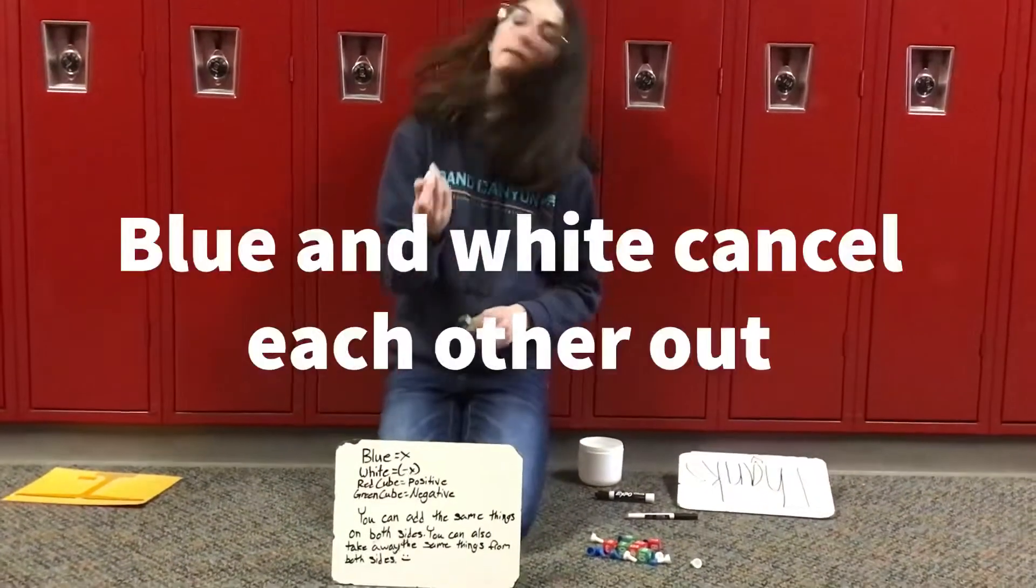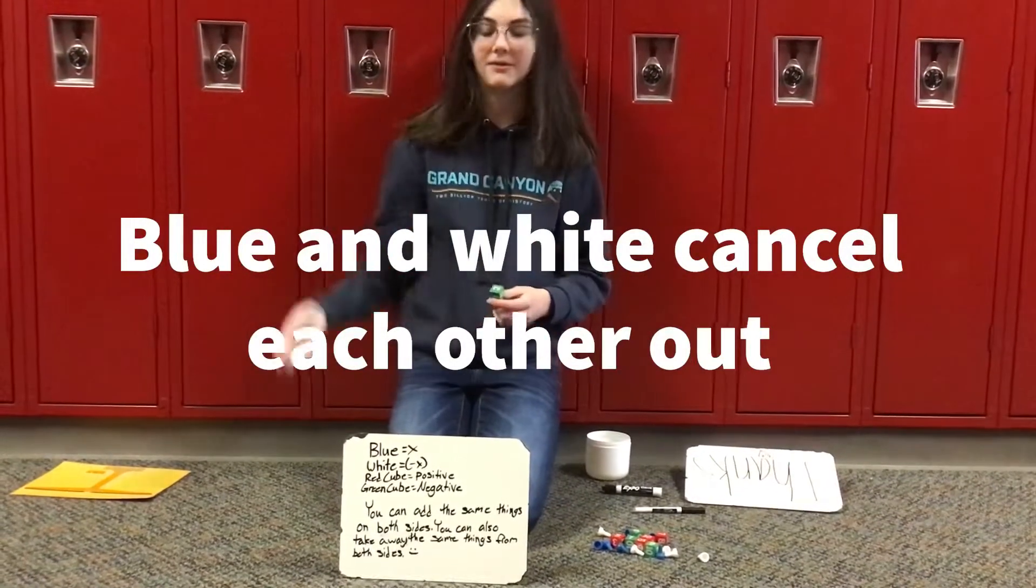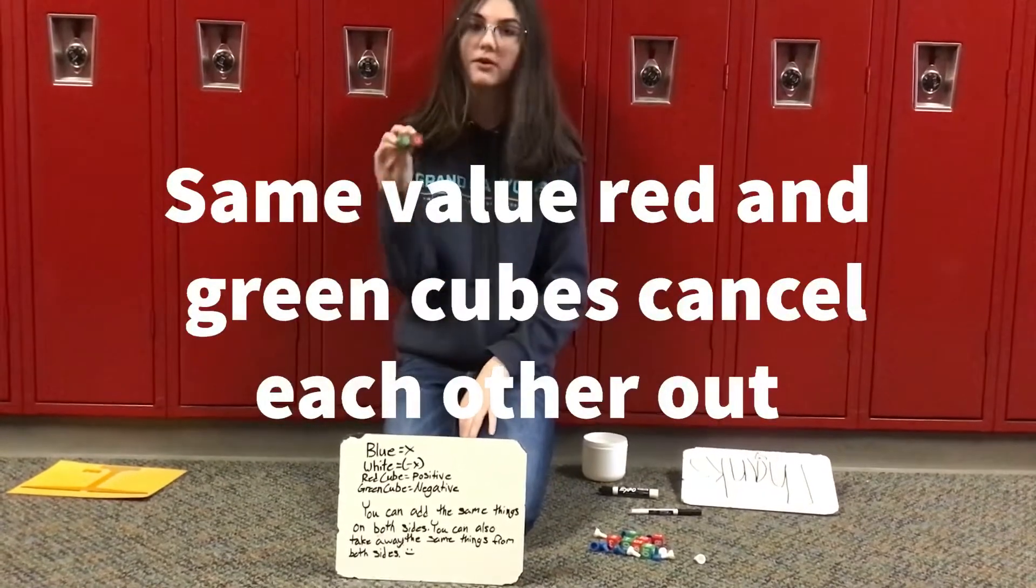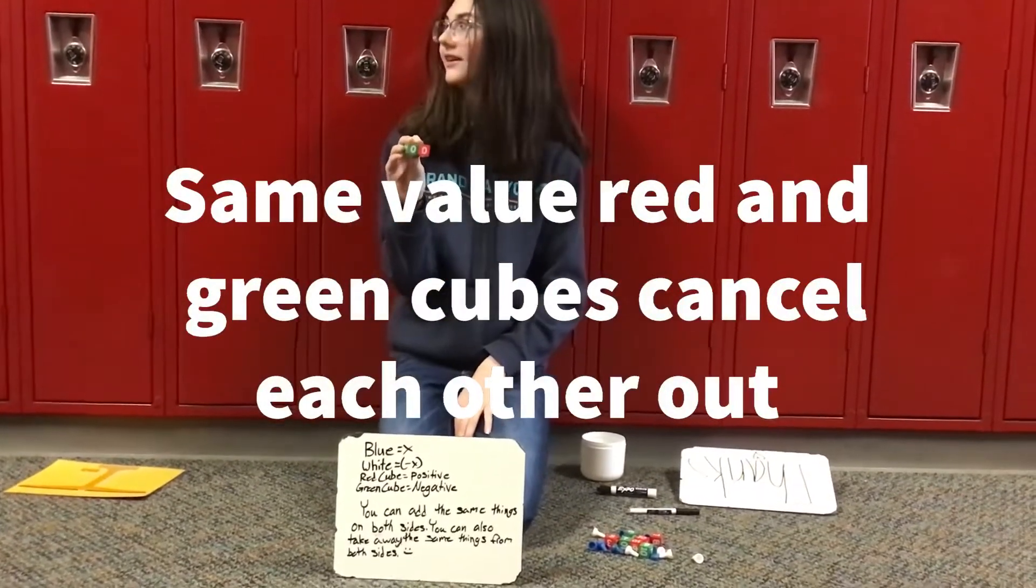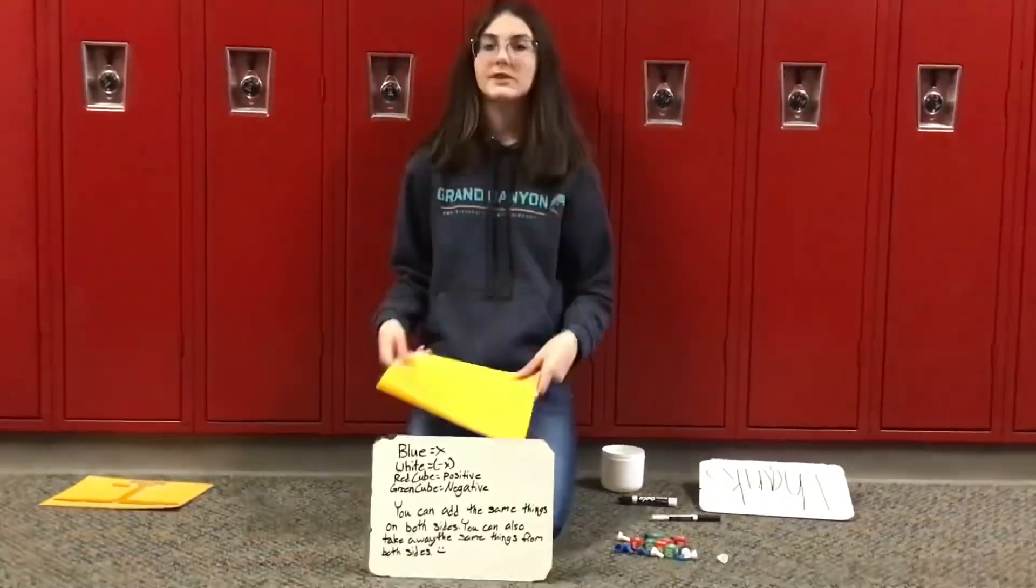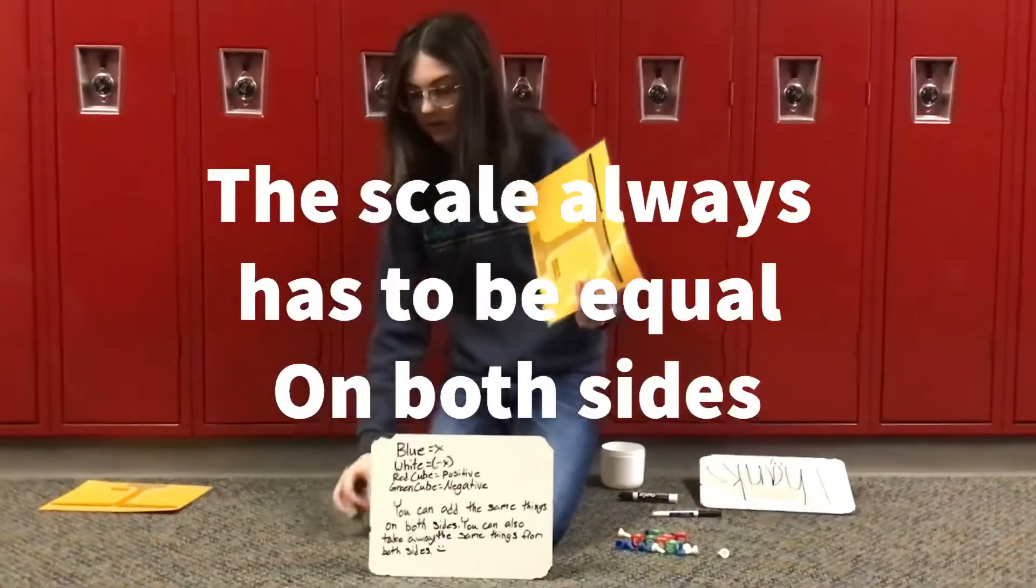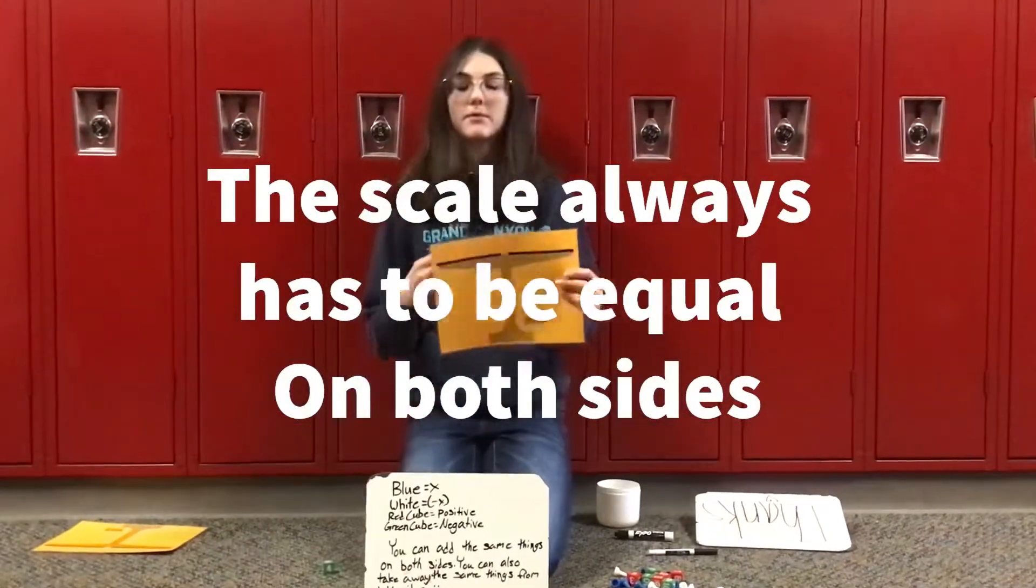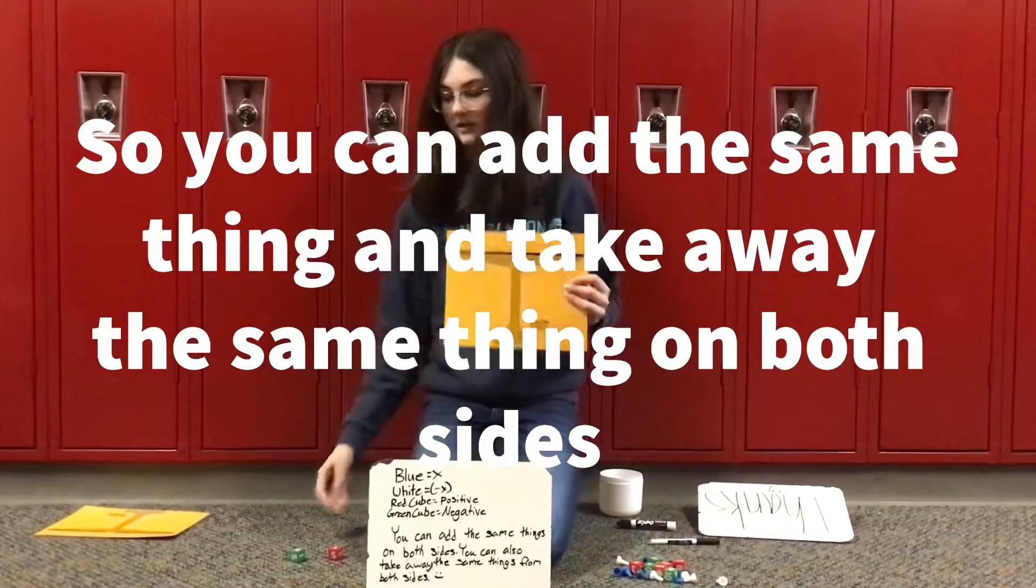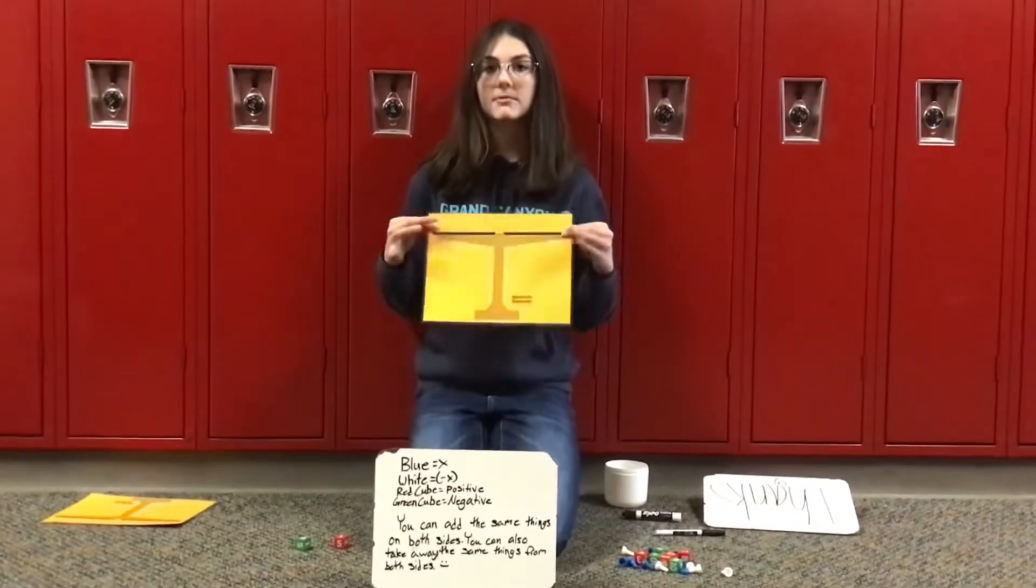The blue and white pawns cancel each other out. And if they're the same value, the green and red cubes can also cancel each other out. This is the scale we're going to be using, and you can add the same thing on both sides. So I can add a red 5 on both sides, and the scale always has to be in balance.